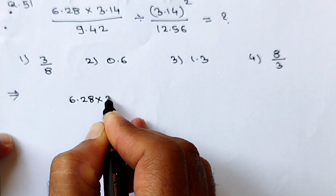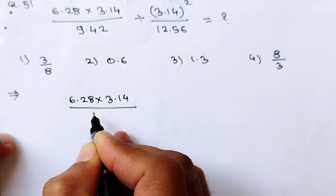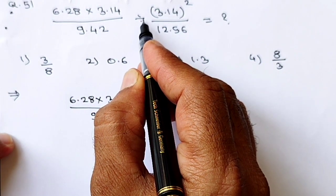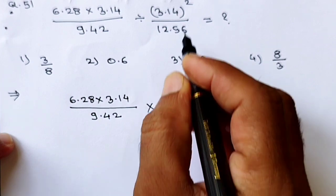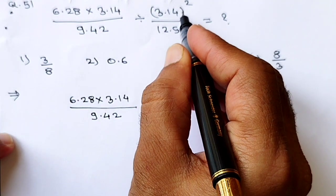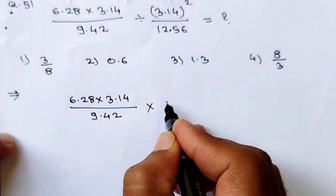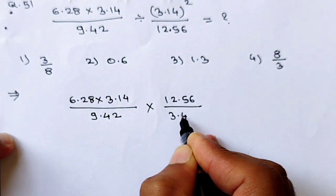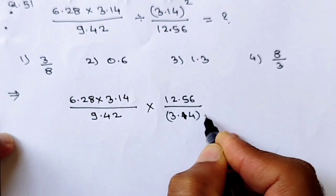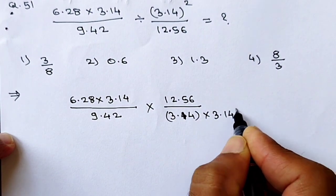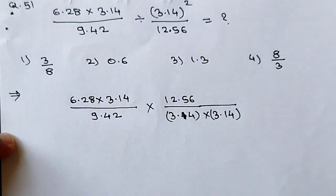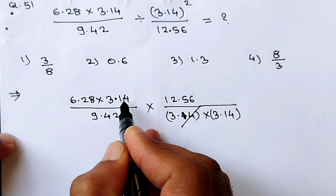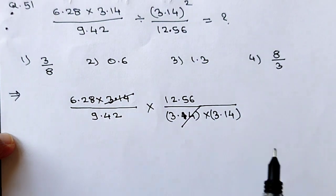6.28 × 3.14 divided by 9.42. Now, if we change this division sign and take it as multiplication, then these terms will go to opposite sides. Means 12.56 will be in the numerator and 3.14 will be in the denominator. Bracket square means 3.14 × 3.14. So this is simplified. We can cancel the 3.14 term because these are same terms and are on opposite sides of this bar.